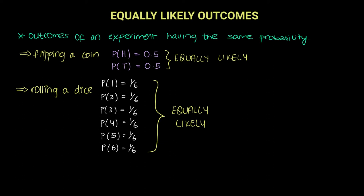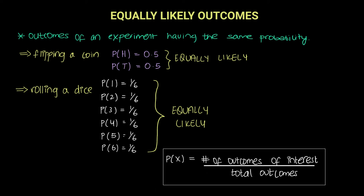So, to conclude, an equally likely outcome is when the outcomes of an experiment have the same probability. If you can identify in your question that these outcomes have equally likely chances of occurring, it will make your calculation so much simpler. And we use the formula: the probability of an event X is equal to the number of outcomes of interest divided by the total number of outcomes.